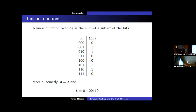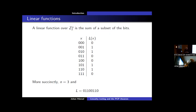The inputs are bits, the output is a single bit. Which linear function is this? You sum the two rightmost bits — that's the output. It's the exclusive OR: if they're both zero you get zero, if one is one and the other is zero you get one, and if both are one you get zero, since one plus one equals zero. That's the linear function.